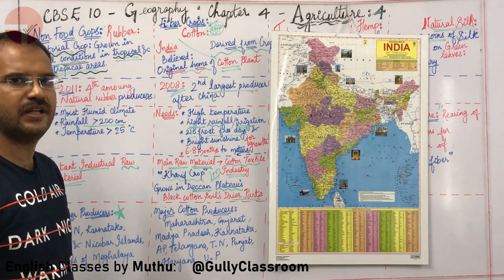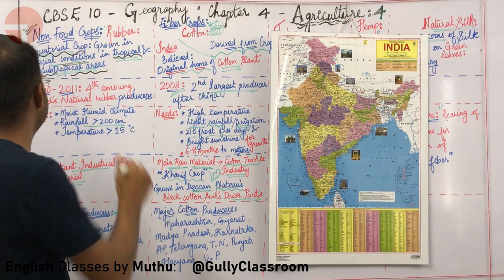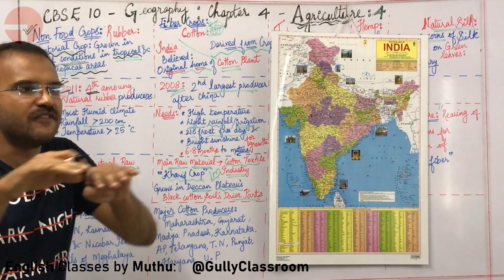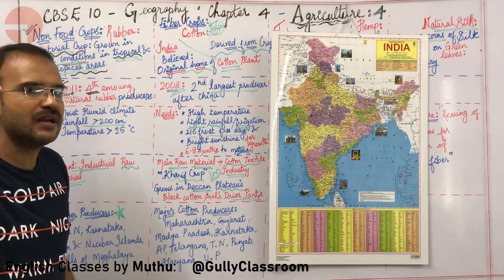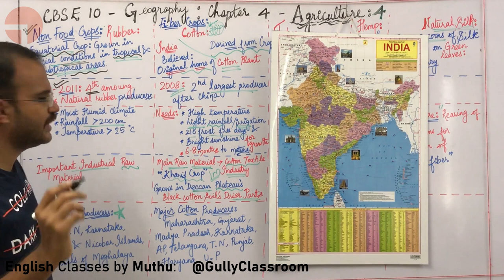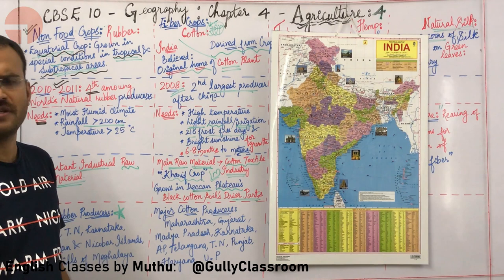What is India's position in rubber production? In the year 2010 to 2011, India was fourth in the world's natural rubber producers. Rubber needs a lot of rain and a lot of sunshine.